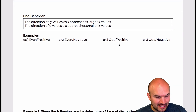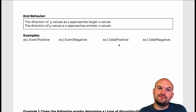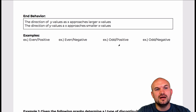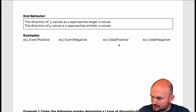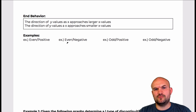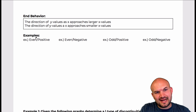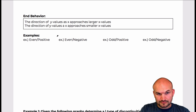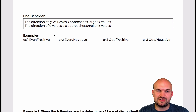Last but not least, let's look at end behavior. We'll get into end behavior more in depth when we start talking about polynomials. But most functions we're going to be talking about are going to have some sort of end behavior to the left and to the right. The basic way to remember end behavior — if you remember the leading coefficient test — is the easiest way to understand that. Let's look at some examples of graphs.